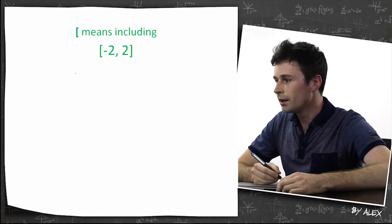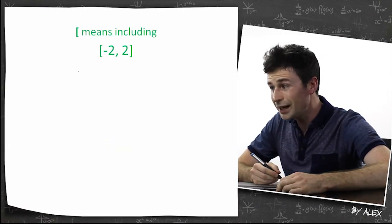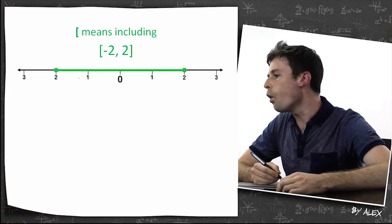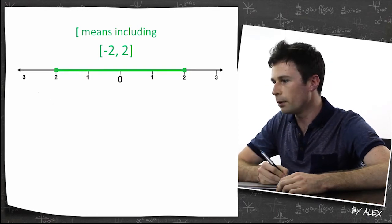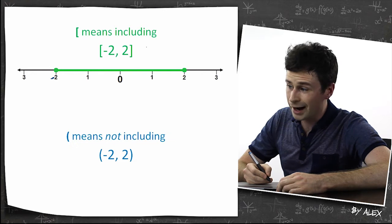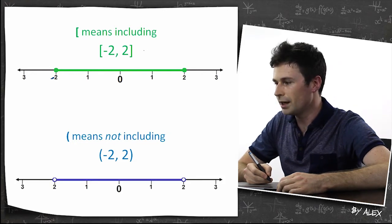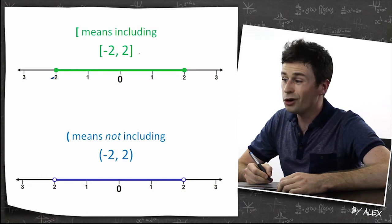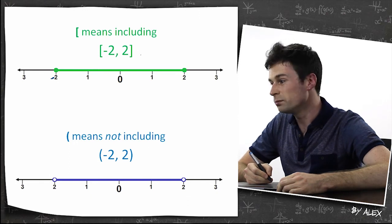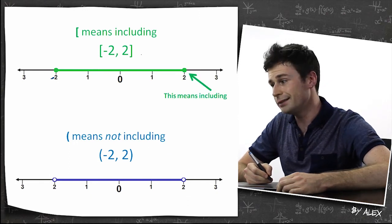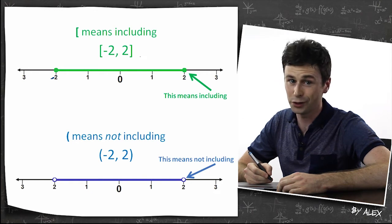If we look at brackets, the square bracket means including from -2 all the way up to 2, including both of them. If we've got a round bracket, that means not including—from -2 all the way up to 2, but not including -2 or 2. If you've got a filled-in dot, that means including, and if it's empty, it means not including.